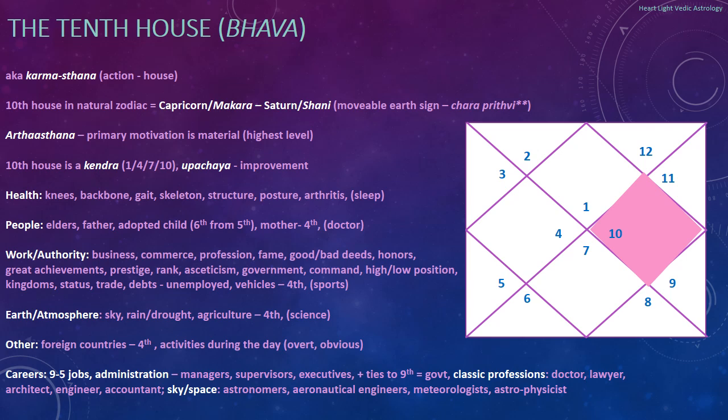The 10th house is also known as an Artha Sthana. Artha means wealth or material wealth. The primary motivation of somebody with a strong 10th house — or where the ruling planet of the chart has gone to the 10th house — would be living in the material world: making money, building a family, creating a house or cars, and accumulating things on that level. Of the Artha Sthanas, the 10th house is the highest level of Artha — the highest level of material building.